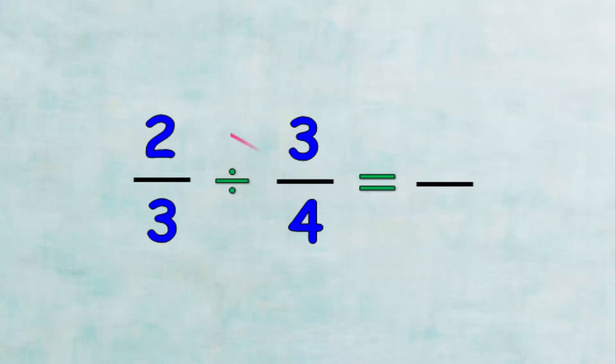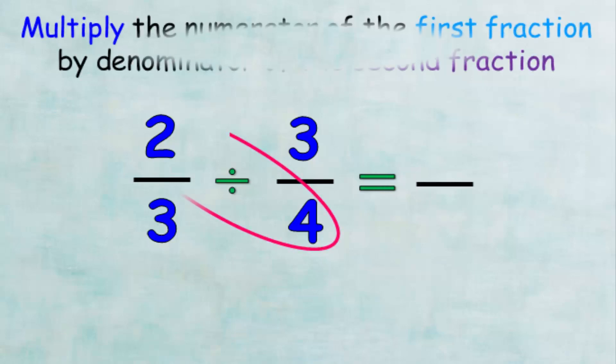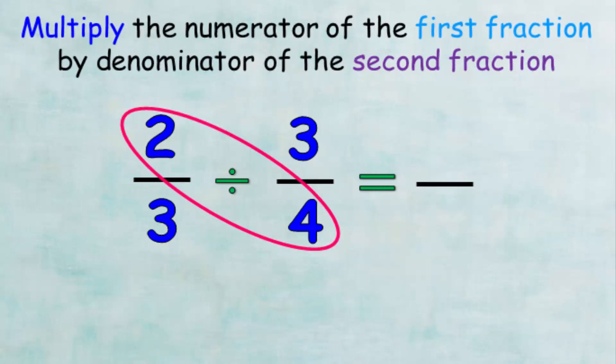In this example, we want to find the quotient of 2 over 3 divided by 3 over 4. First, we multiply the numerator of the first fraction by the denominator of the second fraction and put the product in the numerator of the resulting fraction. Here we multiply 2 by 4 to get 8 and put it in the numerator.